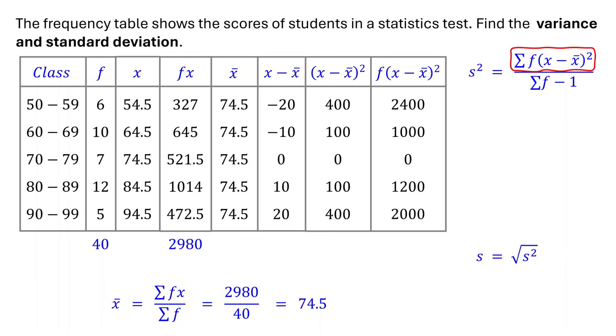Now, to get the sum in the numerator, you just need to add up all the products of the squared differences and the frequencies. Adding these values, we get 6600. We already calculated the total frequency earlier. It's 40. Simplifying this, we get 169.23. So the sample variance is 169.23.